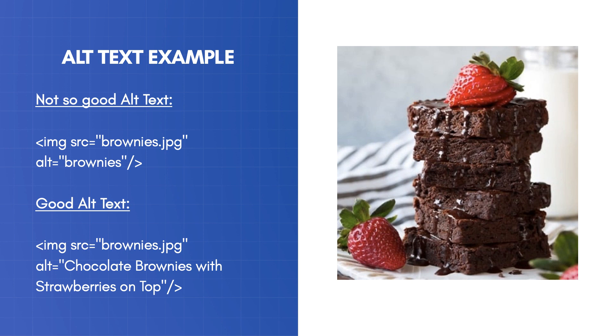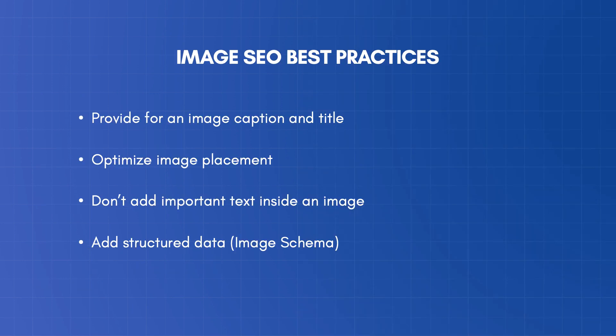Here is an example of a good alt text for the image on the right. Some other tips to take into account when using images in your content: Provide an image caption and title. Besides the alt text, search engines can use the image title and caption to better understand the subject matter of your image, so it is necessary to provide them with these values. Optimize image placement — you can position your images anywhere on the page, but if you want a particular image to be taken into account by search engines, especially if it's a custom, original, and unique image, then add it closer to the top with the relevant alt text, image title, and caption.